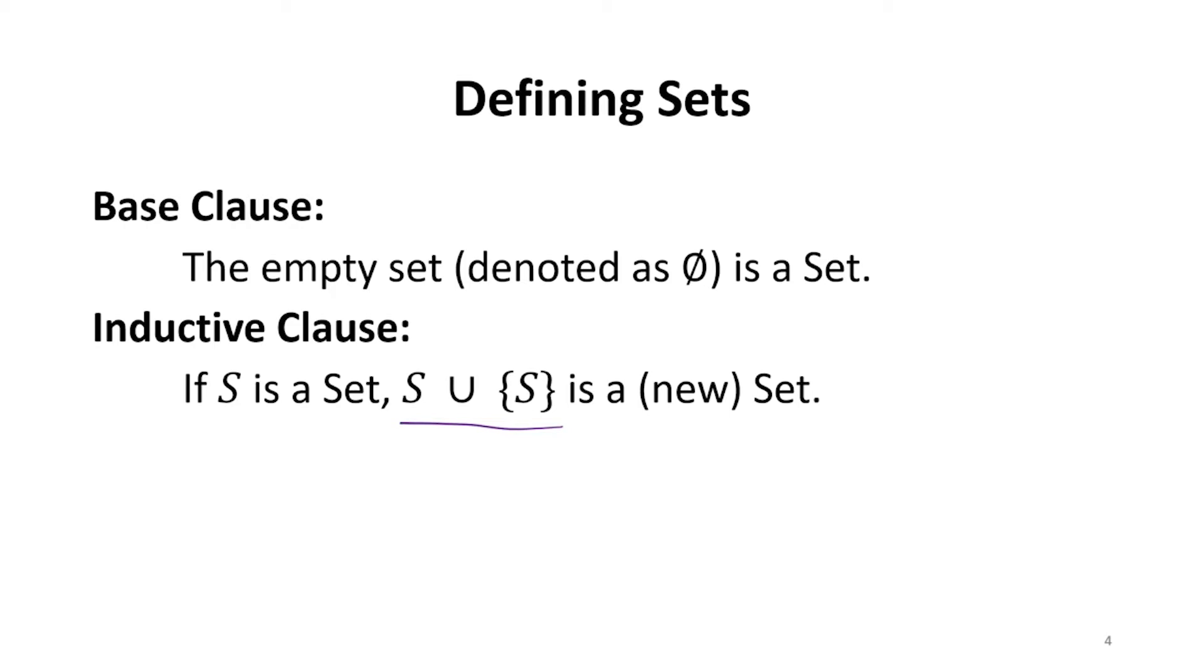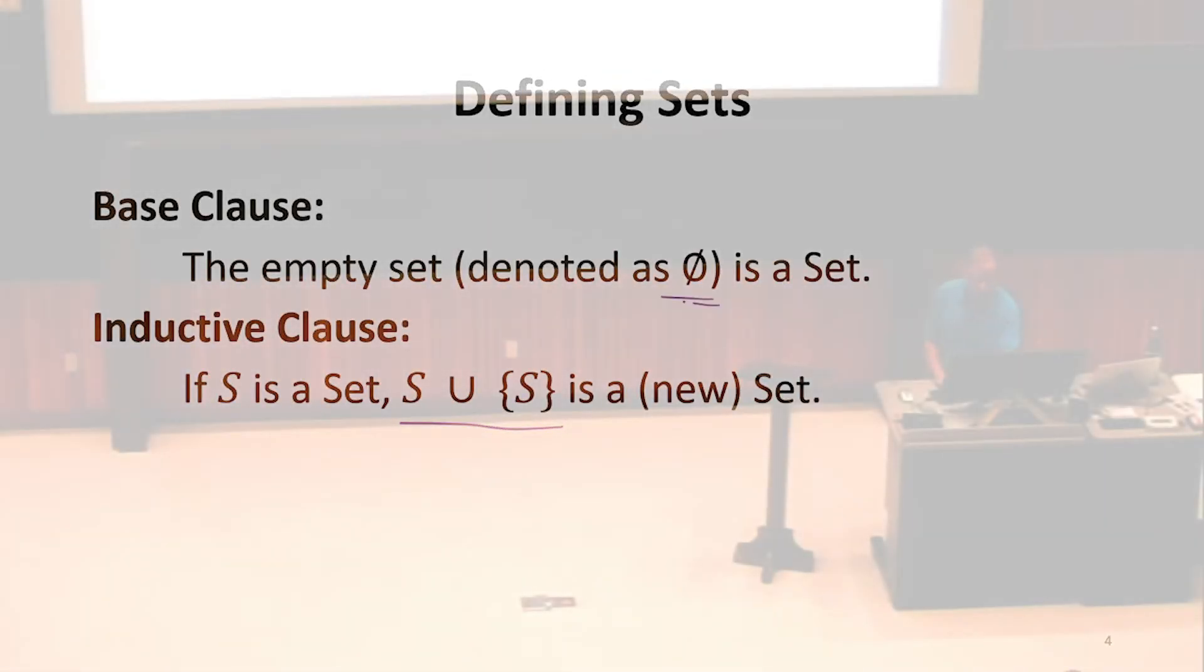That rule was kind of uncomfortable because it required drawing this X from some mysterious universe that we might not have defined yet. So now we're going to avoid that. We're going to say define the empty set, which we'll denote like this. And we're going to have an inductive clause that says we can construct a new set by uniting S with the set containing S.